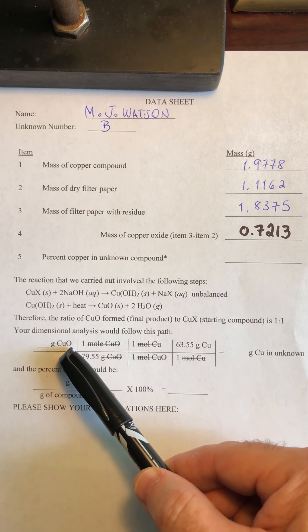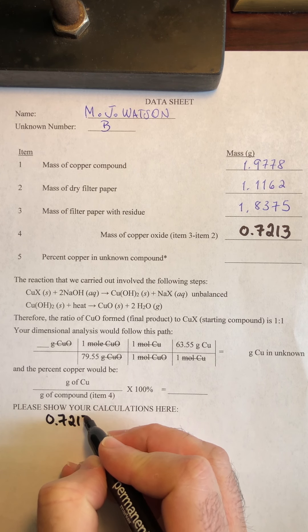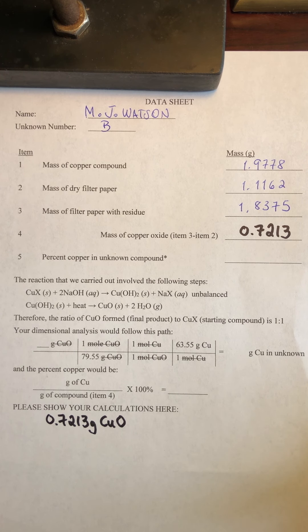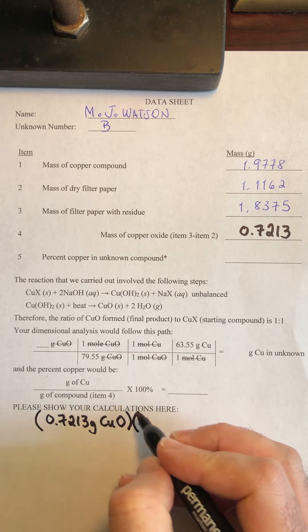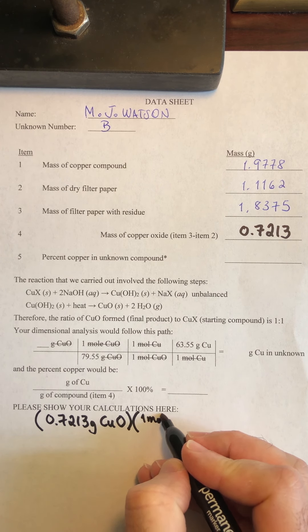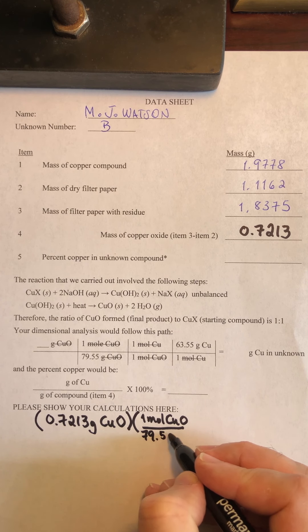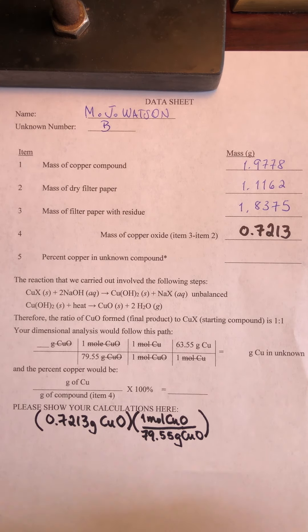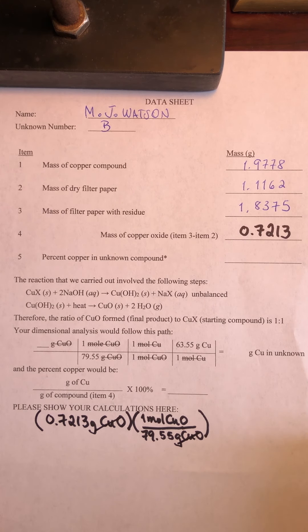So it says here, I'm going to start out with the grams of copper oxide. So that's 0.7213 grams of copper oxide. And I want to find out how many moles of copper were recovered. So this would be, like it says here, one mole of copper oxide is 79.55 grams of copper oxide. And as your indicator here says, that means the grams of copper oxide are going to cancel out.